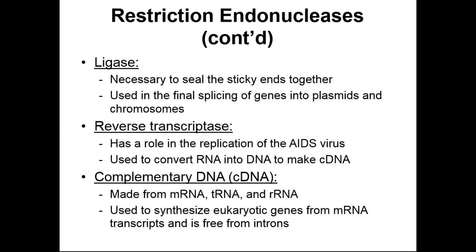Think back to our eukaryotic cells — they go through RNA processing. They remove the introns and leave the exons in the fragment. If you take a fully processed piece of messenger RNA, you can use reverse transcriptase to turn it back into a piece of DNA, and then take that piece of DNA and insert it into a plasmid — that small circular piece of DNA — and insert it into your favorite microorganism to produce lots of your favorite protein.